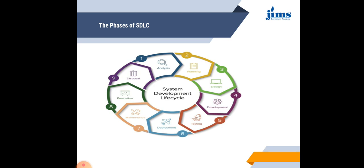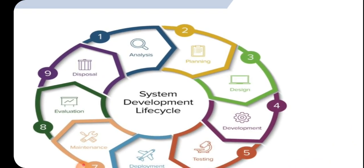The SDLC phases are as follows. The first phase is Analysis — we analyze what needs to be done. Second is Planning — we plan what is needed to define the system. Third is Design — according to the plan we make a design. Fourth is Development — after making a design we develop our system.